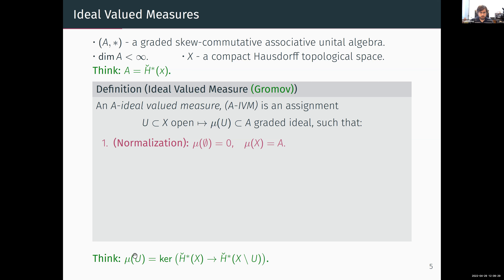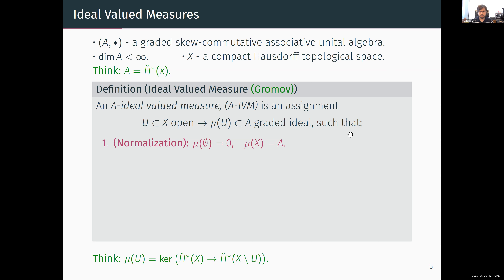The main example to keep in mind is that the measure of a set is the kernel of the restriction to its complement. We want to capture which classes are supported on that set in the sense that they vanish when we restrict to the complement. The normalization axioms follow: the measure of the empty set is zero because its complement is the whole thing, and the measure of the whole space is the whole algebra because restricting to the empty set kills everything.